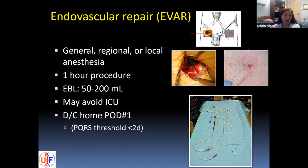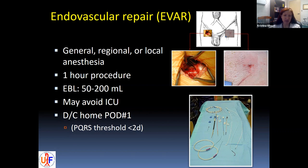Endovascular aortic aneurysm repair is the other alternative. It can be done under different types of anesthesia, is probably a shorter procedure with lower EBL. Depending on hospital protocols, you may avoid an ICU stay, with typical discharge home on post-op day one. There are actually national thresholds that mandate less than a two-day hospital stay for EVARs as far as reporting standards.